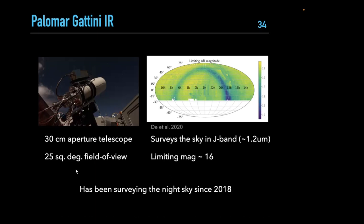PGIR has been surveying the night sky since 2018 at a cadence of about two to three days, reaching a limiting magnitude of about 16th magnitude. The sky coverage plot is color-coded by limiting magnitude — most of the sky reaches about 16-17th magnitude, but the galactic plane region drops significantly due to source confusion noise, where sources blend into each other and sensitivity is reduced.